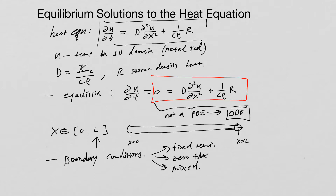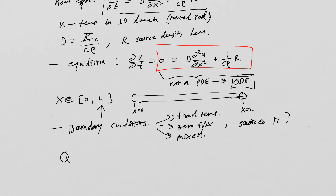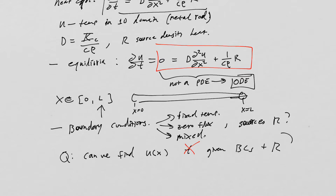There are also sources r. What we want to find is an equilibrium temperature distribution — given boundary conditions and the source r, can we find a temperature distribution with no time dependence?